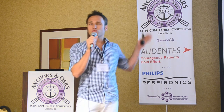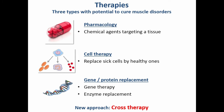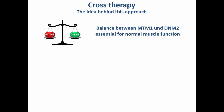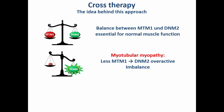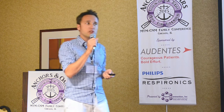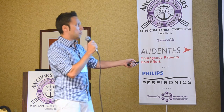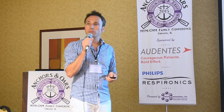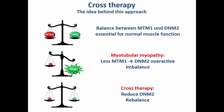In our lab we have developed a new concept called the cross therapy, which doesn't really fit the classical approaches. We found that there seems to be a pretty important balance between MTM1 and Dynamin-2 that is essential for normal muscle function. In patients with myotubular myopathy, MTM1 is severely reduced, creating an imbalance, and Dynamin-2 seems to be more active. Instead of targeting MTM1, we thought we could try to reduce Dynamin-2 to rebalance the equilibrium.